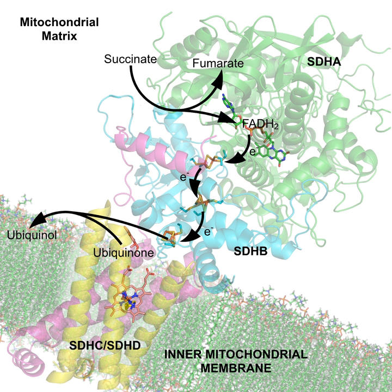A coenzyme that is tightly or even covalently bound is termed a prosthetic group. Cosubstrates are transiently bound to the protein and will be released at some point, then get back in. The prosthetic groups, on the other hand, are bound permanently to the protein. Both of them have the same function, which is to facilitate the reaction of enzymes and protein. Additionally, some sources also limit the use of the term cofactor to inorganic substances.